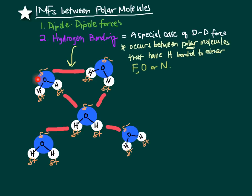Water molecules all contain hydrogen atoms, and these hydrogen atoms are bonded to oxygens. It turns out that in molecules that have hydrogen bonded to highly electronegative elements like fluorine, oxygen, or nitrogen...